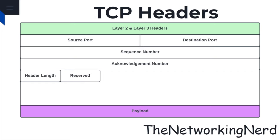The reserved header is reserved for future use and must be set to zero. This ensures compatibility and potential future extensions to the TCP protocol. The flags header provides essential control and signaling functions within the TCP protocol, and it allows for the establishment, maintenance, and termination of connections while ensuring reliable and orderly data transmission.